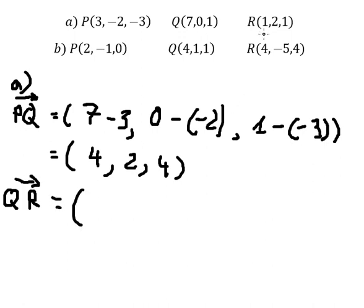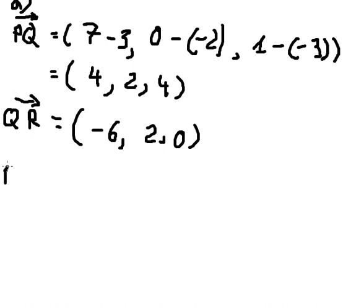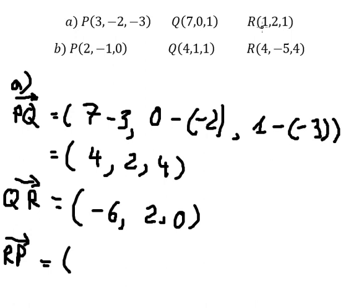Now we do the same for the next vector QR. We have one minus negative one minus seven, that is negative six. Then two minus zero, and one minus one for the next component.